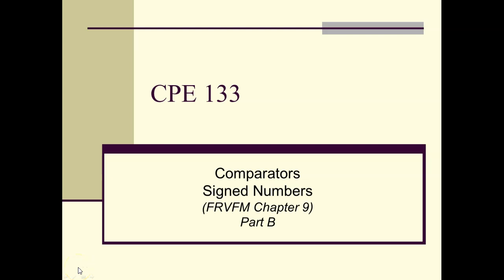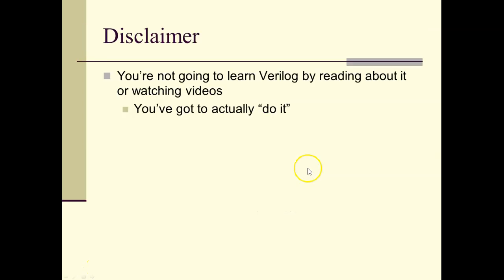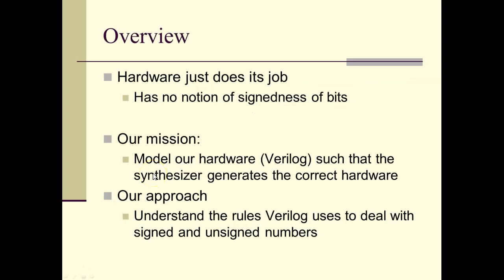This is CPE 133 and we're talking about comparators. This is Free Range Verilog Foundation Modeling, Chapter 9 — the second lecture. The first part covered comparators and important issues, but those comparators were inherently unsigned, and we actually need the flexibility to work with signed and unsigned numbers. You're not going to learn Verilog by reading about it or watching videos — you actually have to go do it, fire it up, crank some circuits out. We're designing hardware, and we'll write models and have the synthesizer generate real hardware from them.